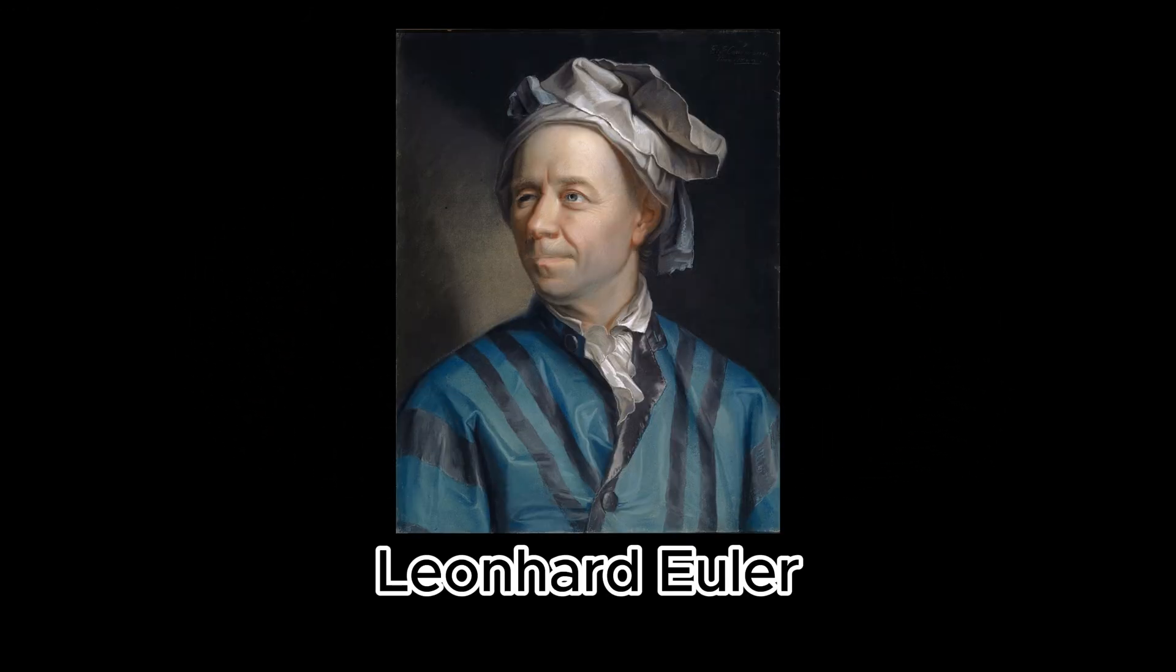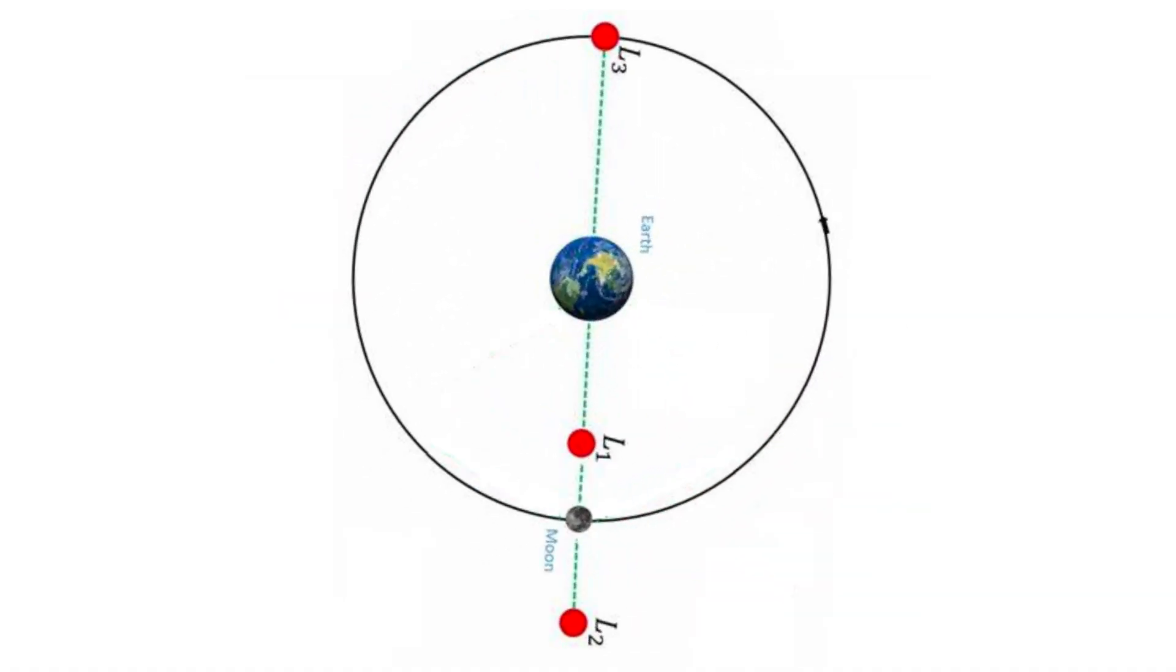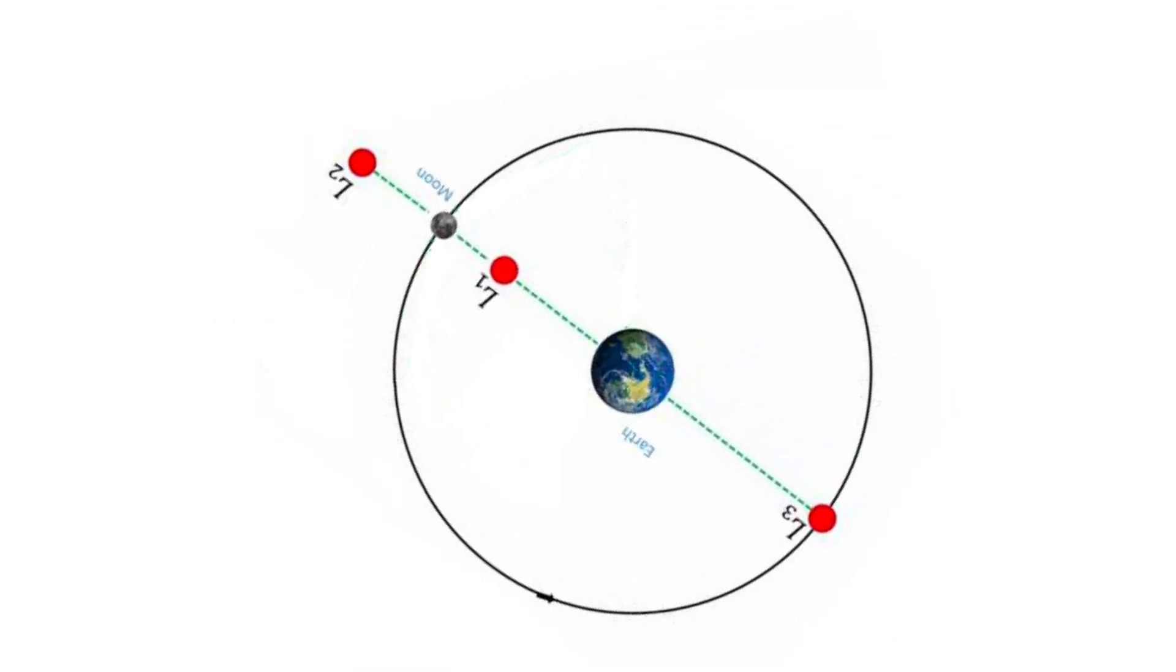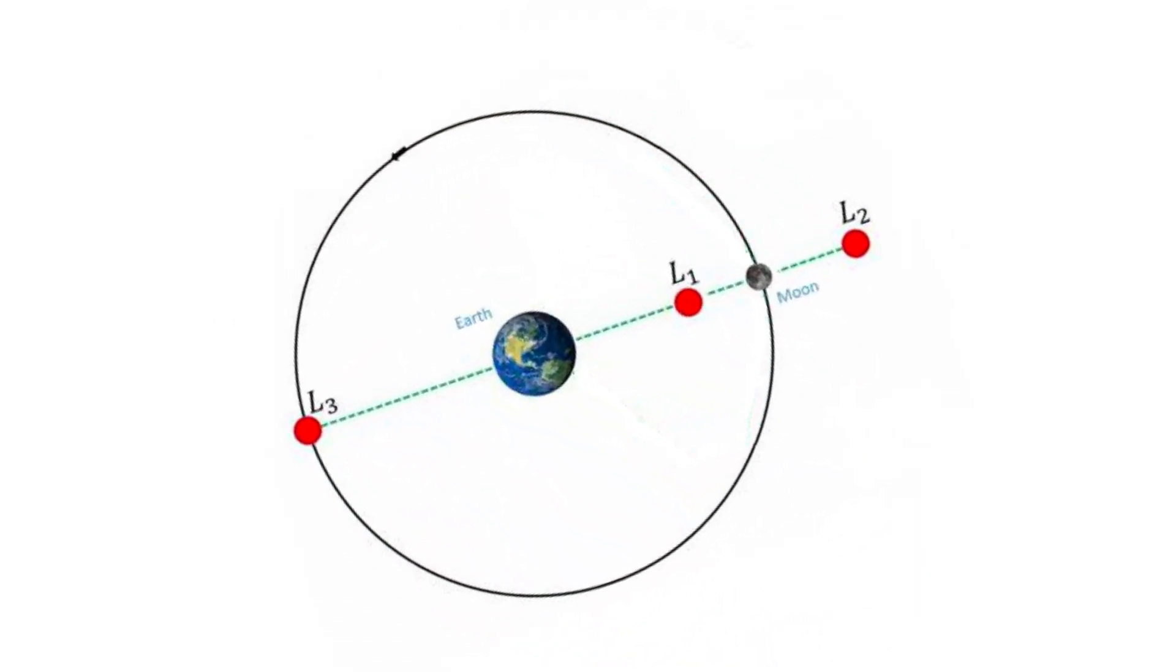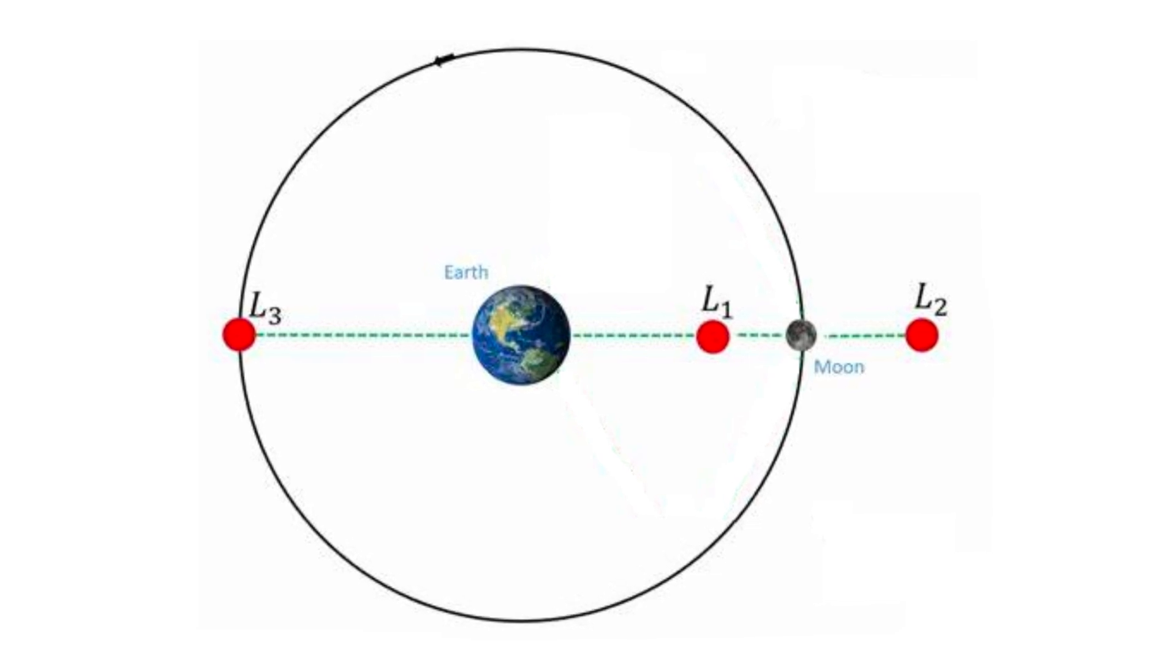The first was Leonard Euler. He found the simplest solution. If three bodies are on the same line, they can orbit the common center of mass without changing orientation. Naturally, there are three such positions, three Euler points, which provide a particular solution to the three-body problem.